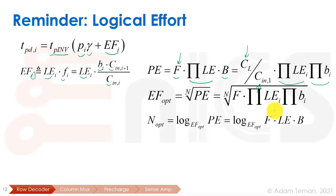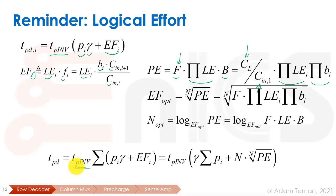The optimal number of stages is therefore log of the optimal electrical effort, which lets us find the optimal way of constructing our path. The final TPD is the inverter's nominal TPD times the sum of all partial TPDs, which is the contamination delay of each stage times gamma plus the electrical effort of that stage. If you don't remember logical effort from a previous course, you can go and review it.